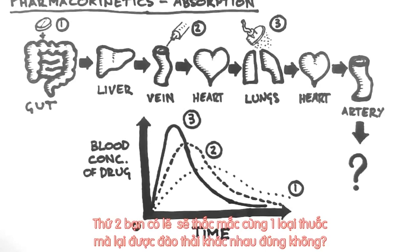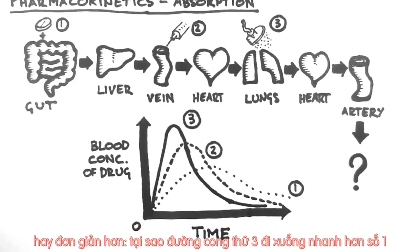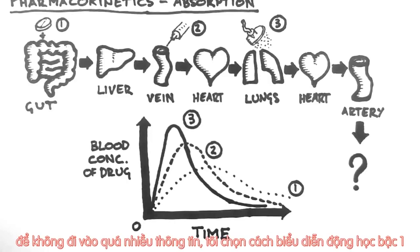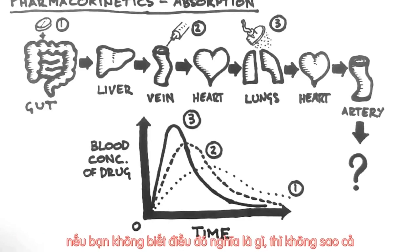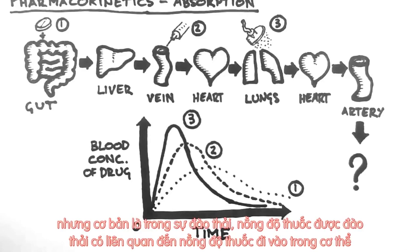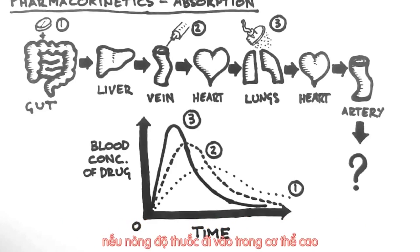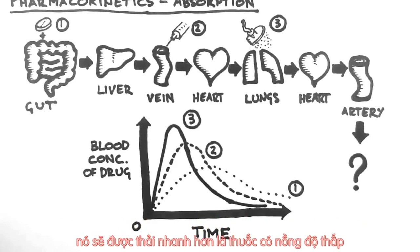You might be wondering why the same drug is excreted at different rates, or more simply, why curve number 3 falls quicker than curve number 1. I have chosen to show a drug that conforms to first-order kinetics. We'll cover all this in a later tutorial, but it basically means that the rate of excretion is proportional to the current concentration of the drug. If the concentration of the drug is high, then it will be excreted faster than if the concentration is low.